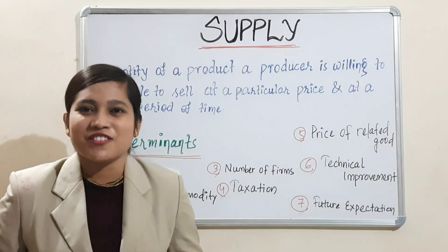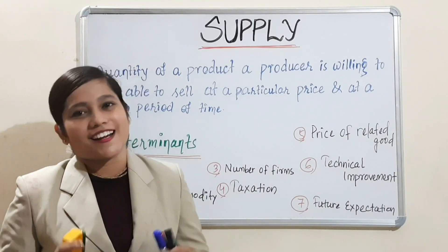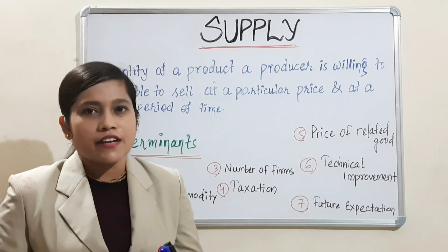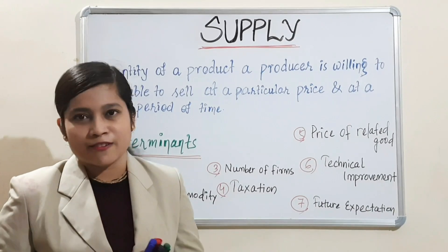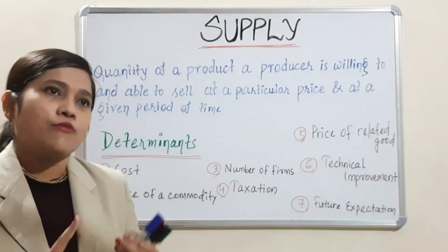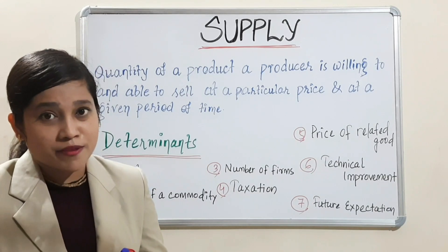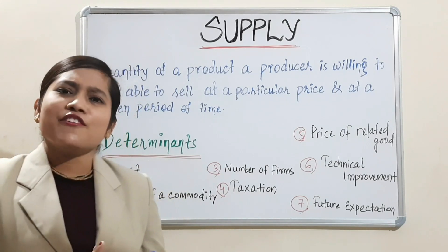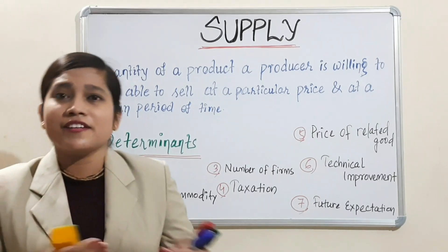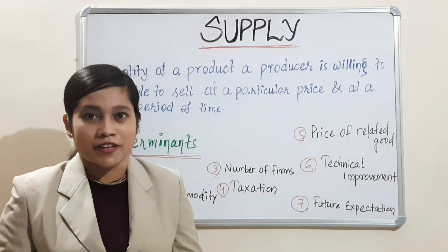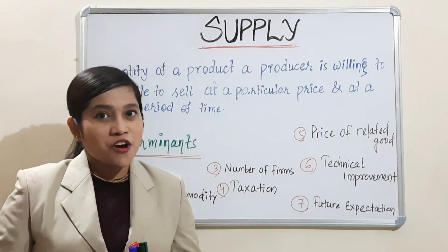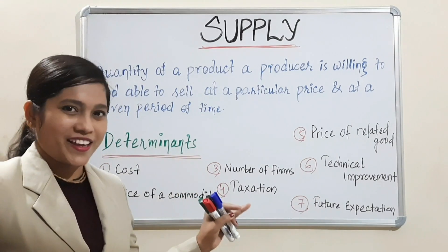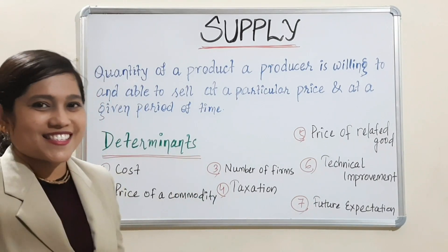Hey guys, you are watching my channel Economics at a Glance. We are done with the demand chapter that contains what is demand, types of demand, different elasticity of demand, and different effects — price effect, income effect, and substitution effect. Today onwards, we will start a new chapter that is supply. So let's get started.